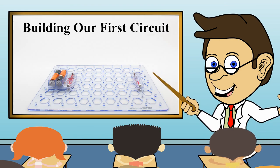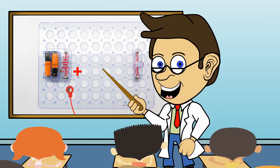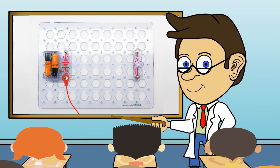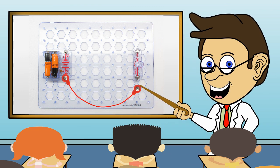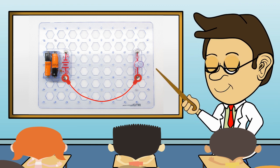For our first circuit, we will use the wires. Let us connect the red wire to the plus symbol on the battery holder and then to one side of the lamp. But it does not light up. Why?